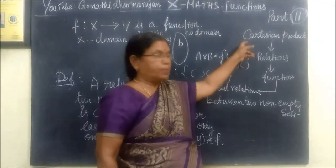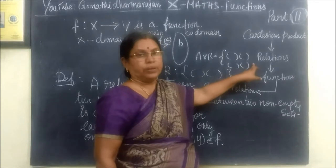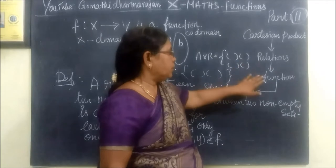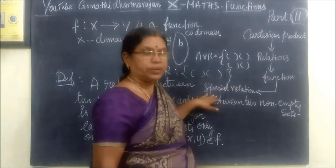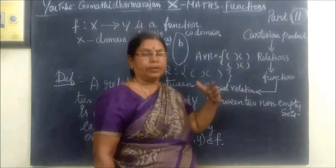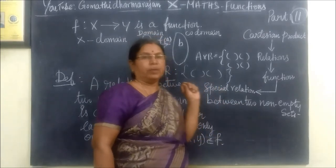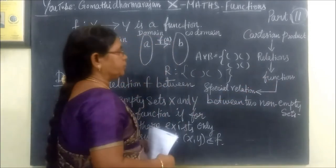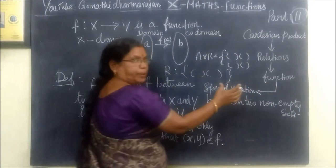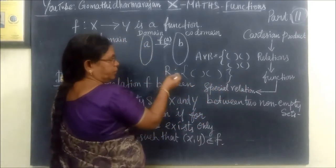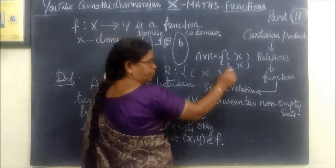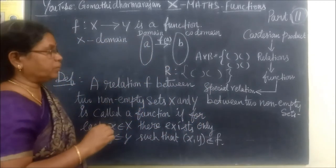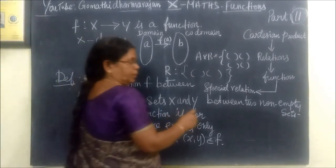Cartesian product is a subset of the relation. Relations are a subset of functions. This is a special relationship. The relationship has different types. This is a particular relationship - this is a function. We have two non-empty sets.